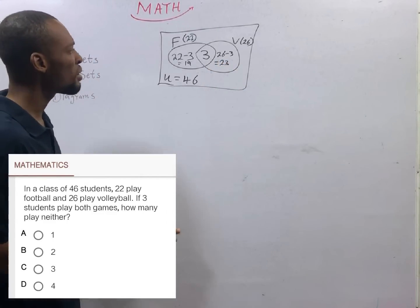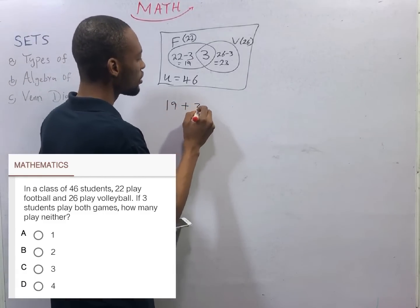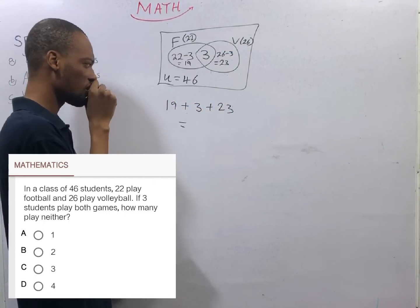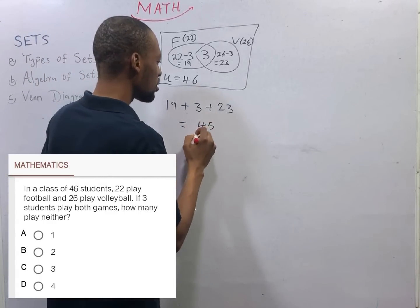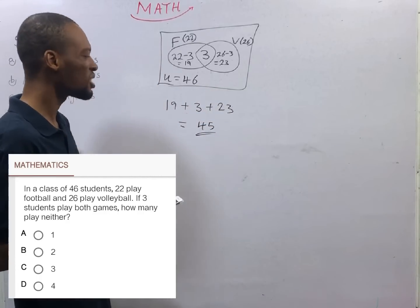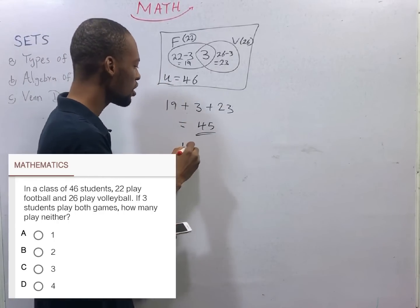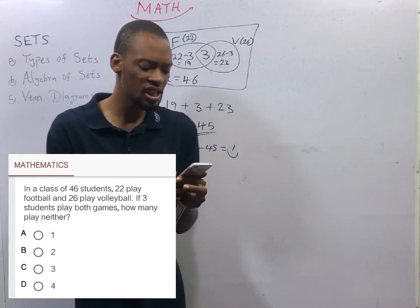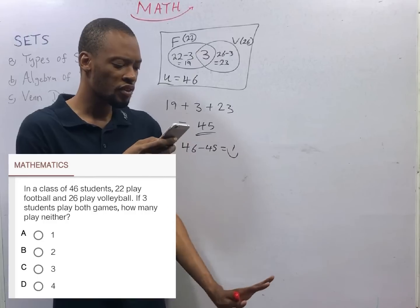The total number of students who play football, volleyball and both will simply be 19 plus 3 plus 23. And this will simply give you 19 plus 3, that is 22, 22 plus 23, that is 45. So 45 students participate in at least one of the activities. But we have total number of 46 students, which means 46 minus 45 is equals 1. One student did not participate in any of the activities. That makes option A the correct option, because we are looking for how many play neither.